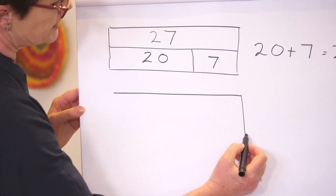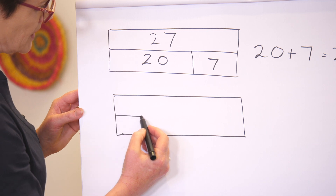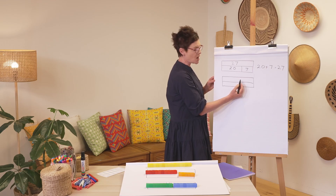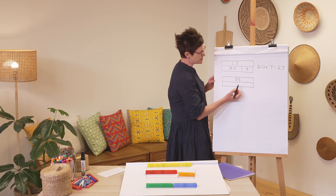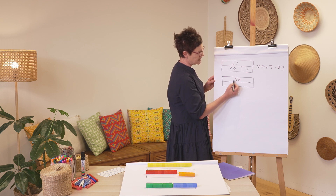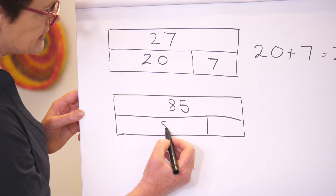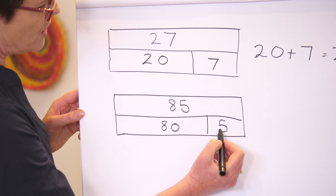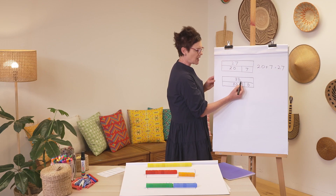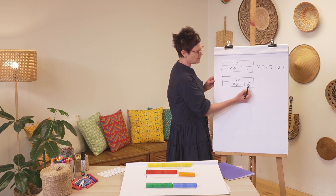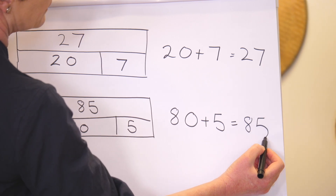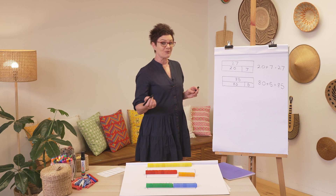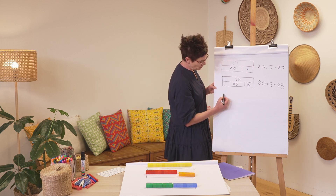Let's try another one — I'm going to go a bit bigger. Here is my bar diagram and I'm going to cut it in half again. At the top I'll place my whole, and this time my whole is 85. I have eight tens, and eight tens is 80, and my five ones. So 85 is the whole, and here are my parts: 80 and 5. Number sentence: 80 plus 5 equals 85.